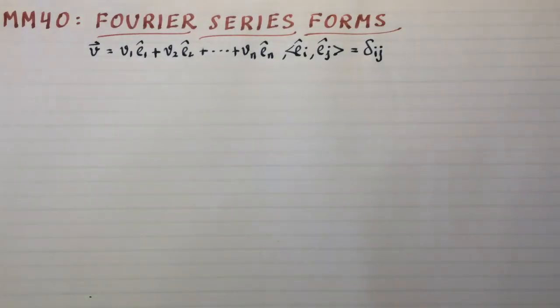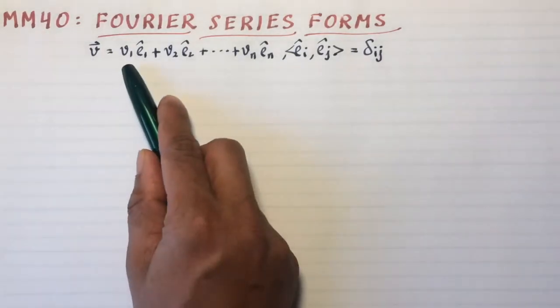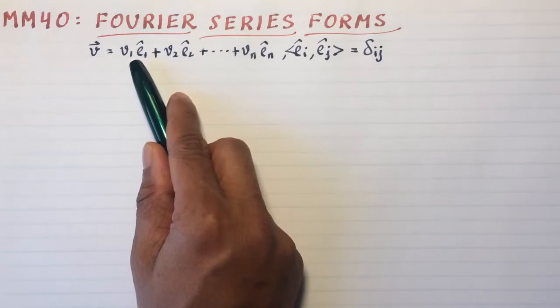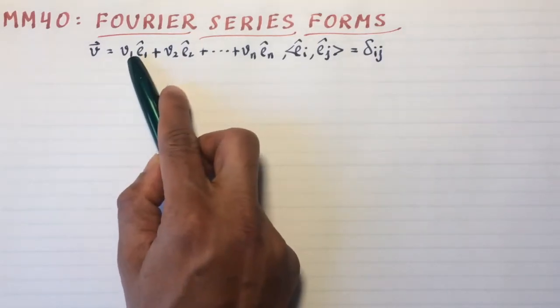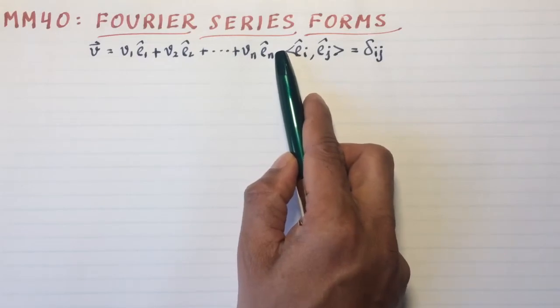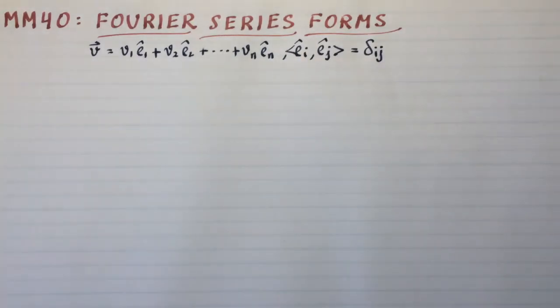The first thing we need to look at before discussing Fourier series is ordinary vector spaces. Any vector can be decomposed as a sum of several components with the coefficients v_i telling you how much of the component in the e_i direction there is. The total vector is then the vector sum of all these things. That's our understanding of ordinary vector spaces and ordinary vectors.